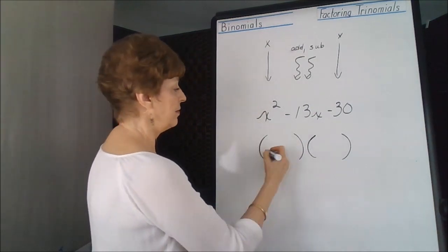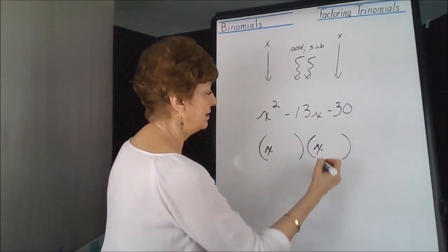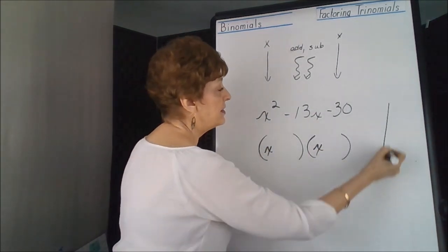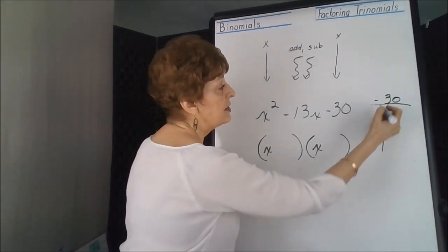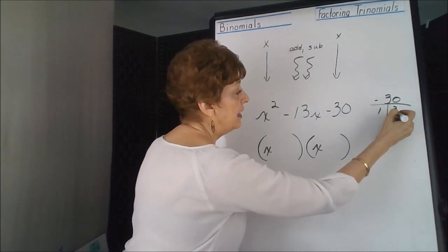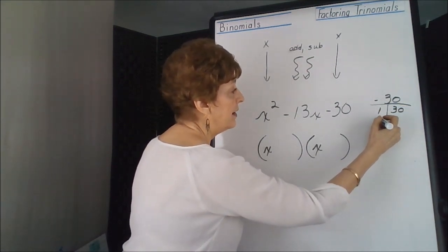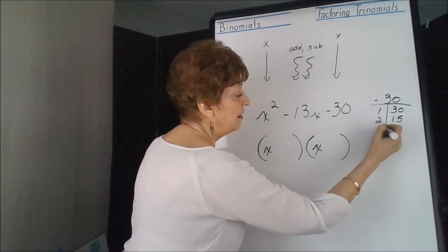We're going to get rid of our x's. Come over and make our T-bar for 30. We need negative 30. So we could have 1 and 30. We could have 2 and 15. 3 works, that's 10.